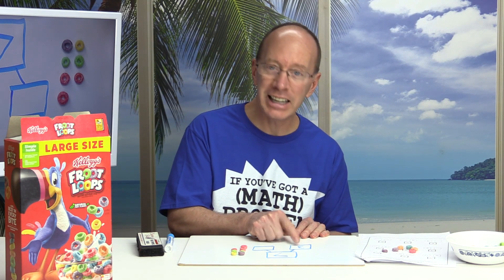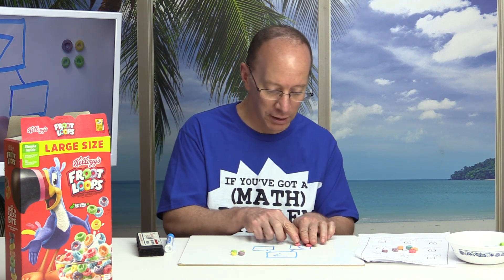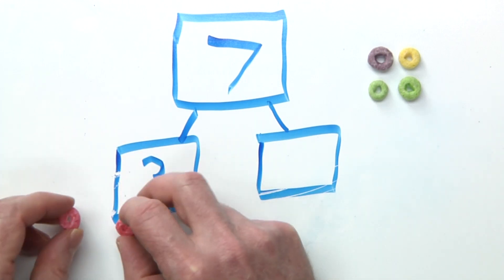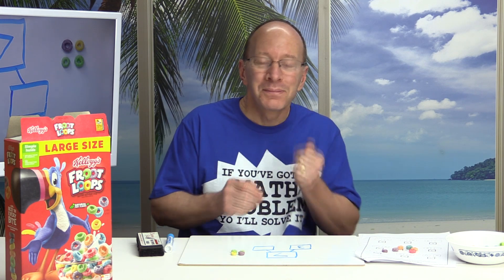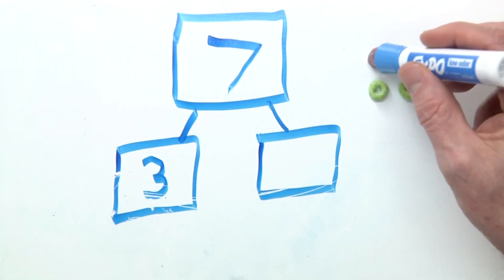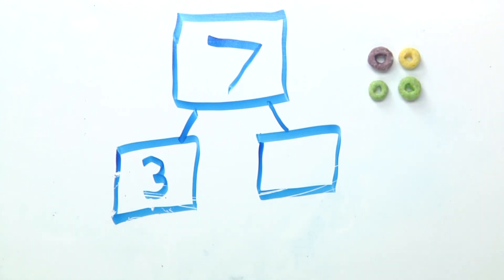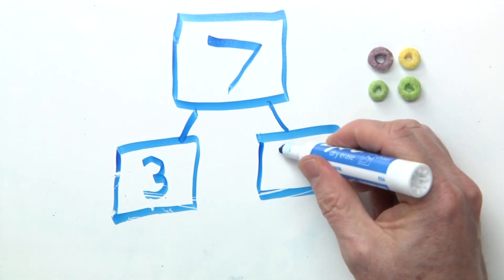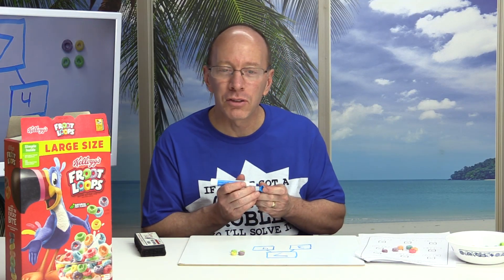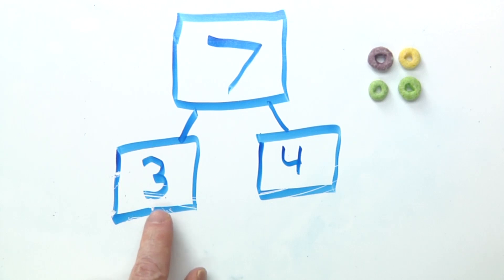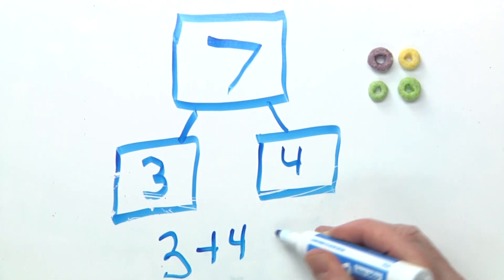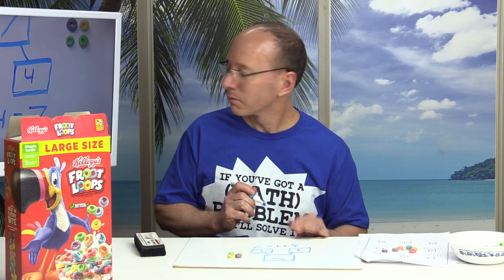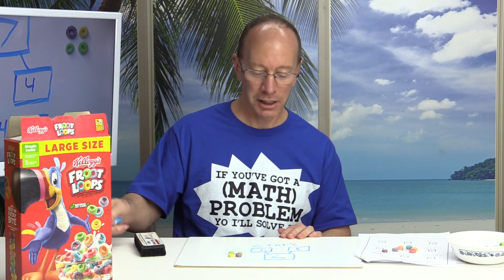Then along comes somebody and they eat 3 of those Fruity Loops. See, there's 3 right here. If you want to, you can even eat them right now. How many do you have left over? Let's count them: 1, 2, 3, 4. There's 4 left over. So we have 3 plus 4 equals 7. All right, that is a number bond.